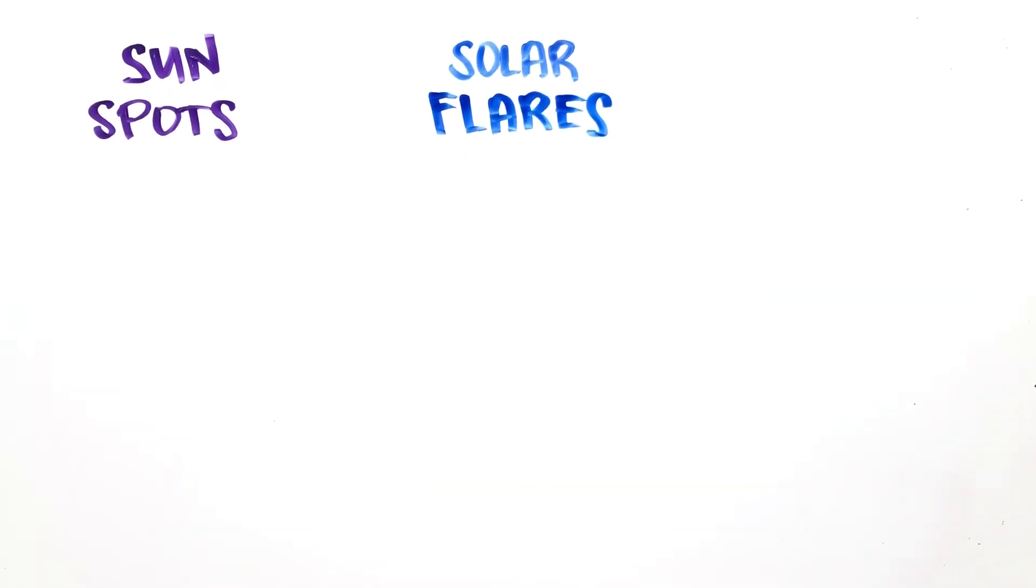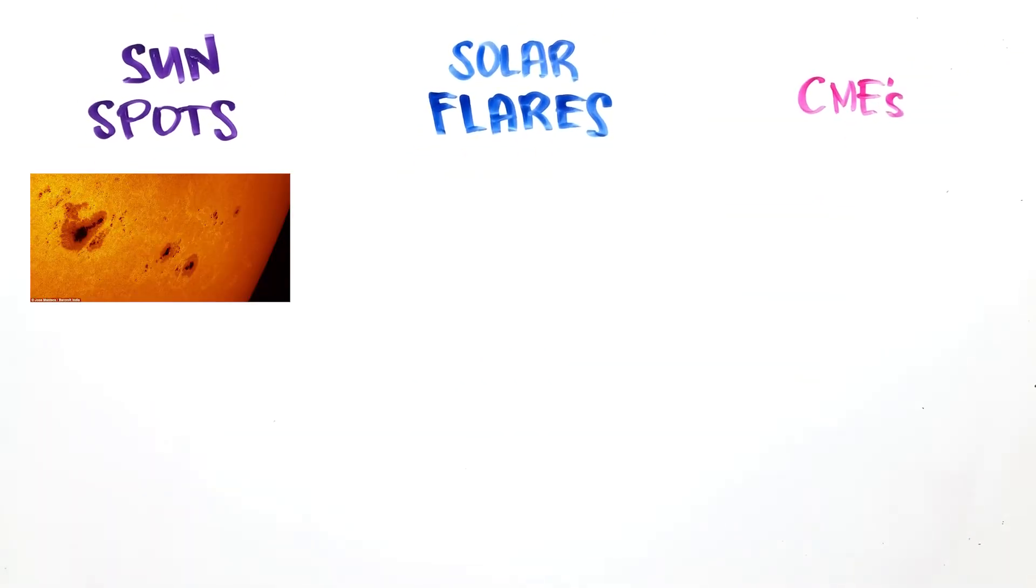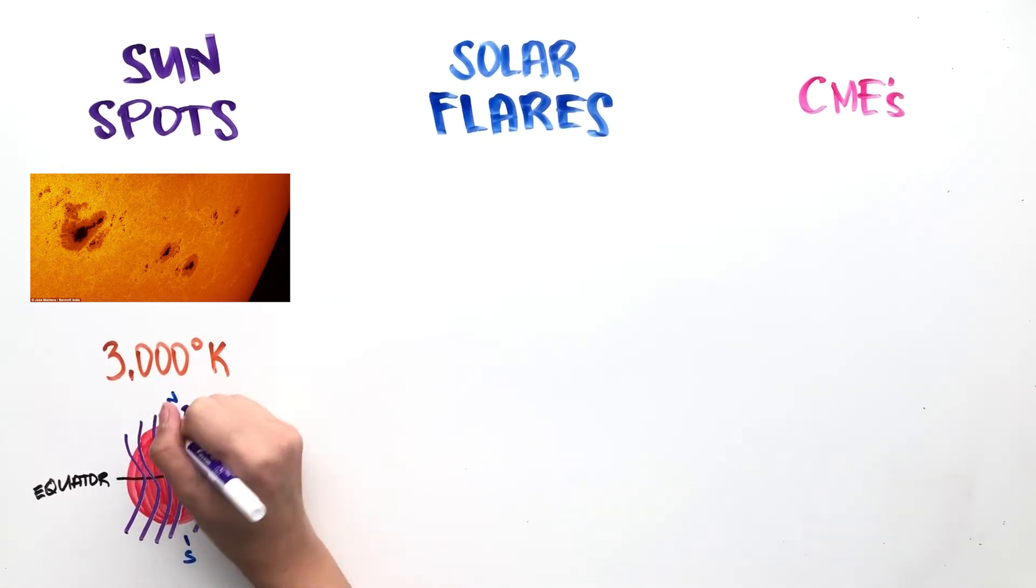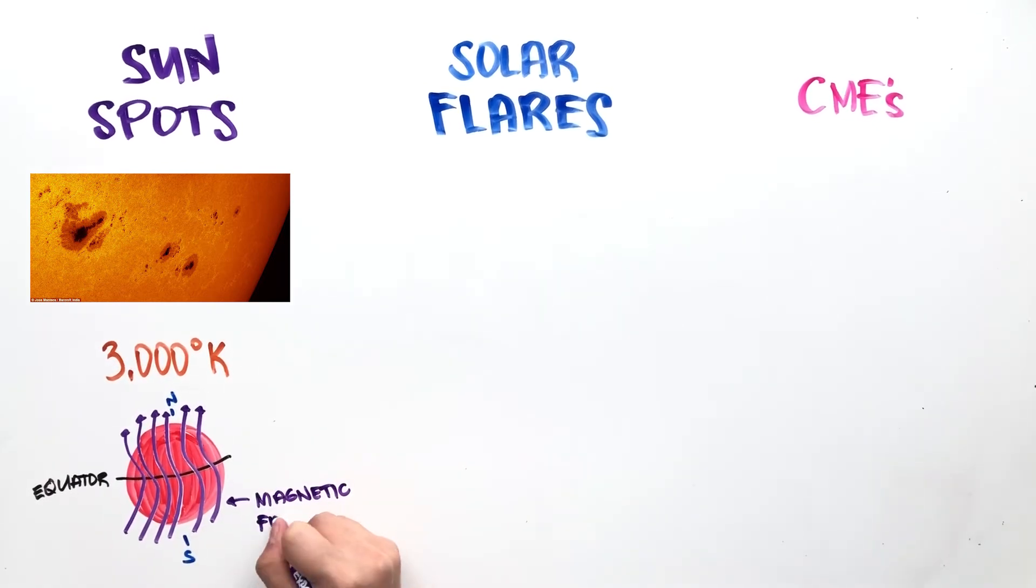But what are the differences between sunspots, solar flares, and CMEs? Sunspots are cooler areas of the photosphere and occur when the Sun's magnetic field is affected by its uneven rotation. They are often larger than Earth and usually occur in groups of up to 100 at a time and can last from half a day to several weeks.